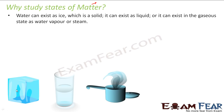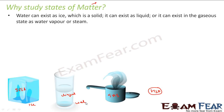The three states are solid, liquid, and gas. If you look at the same material in all three forms — for example ice, water, and water vapors — for all three the chemical formula is H2O.